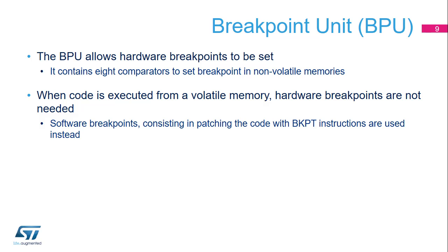The breakpoint unit, or BPU, allows hardware breakpoints to be set. It contains eight comparators to set breakpoints in non-volatile memories. They monitor the instruction fetch address and return a breakpoint instruction when a match is detected. When the breakpoint instruction is executed, the processor halts in debug mode. When code resides in volatile memory, software breakpoints can be used. When a software breakpoint is used, the debugger replaces the instruction with a dedicated instruction called BKPT.